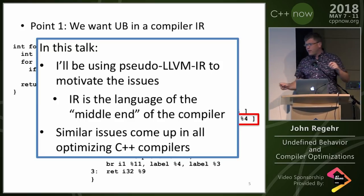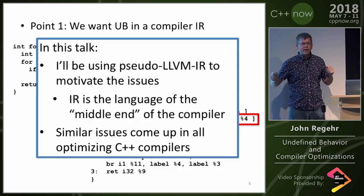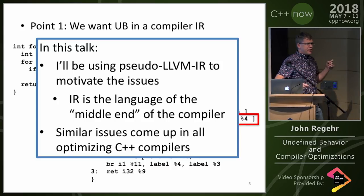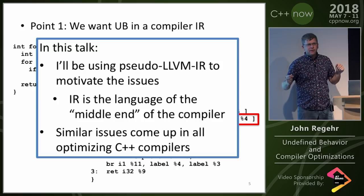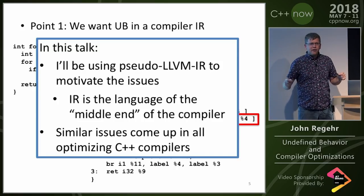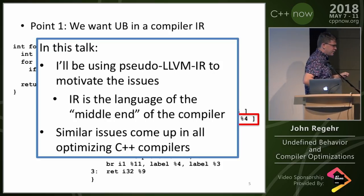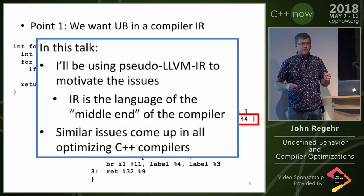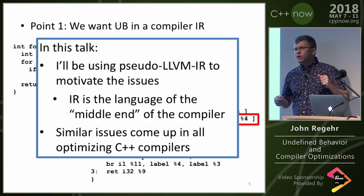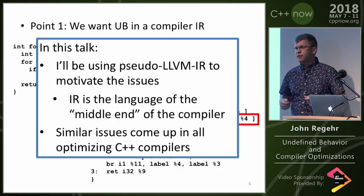In this talk I'll be using a pseudo-LLVM IR — mostly real LLVM IR, but sometimes I take some liberties with the syntax to make things a little easier to display. The IR is the language spoken by the middle end of the compiler, where the heavy lifting happens. Similar issues to the ones I'll demonstrate with LLVM come up in all optimizing compilers — GCC has the same sorts of issues and concepts, and so does Microsoft C. The details are different, but the overall pattern is very similar across compilers.